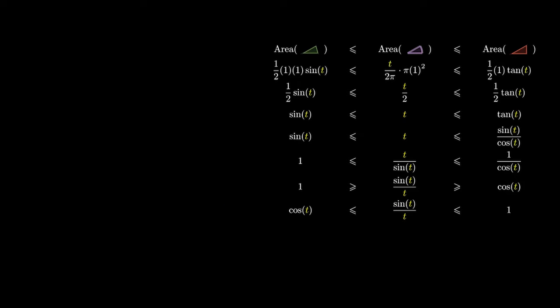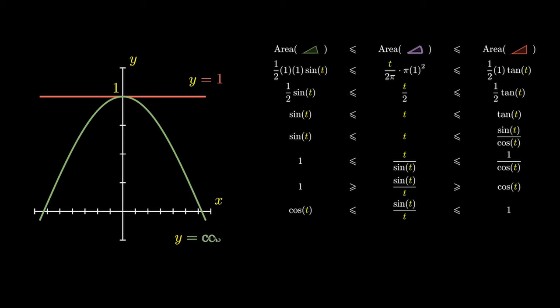We can plot these graphs for easier visualization. The function y equals 1 is the upper function. The function y equals cosine of t is the lower function. And visually we see that the cosine of t approaches 1 as t approaches 0. And clearly the function 1 approaches 1 as t approaches 0.